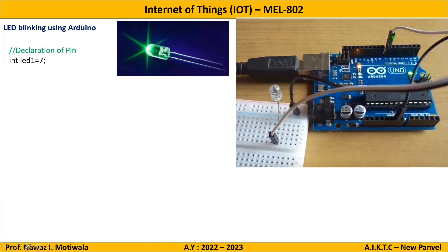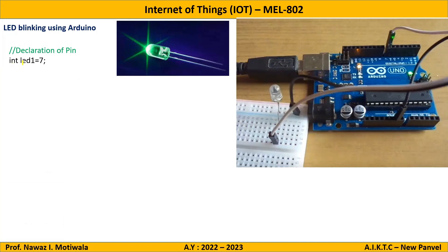LED1 is just a name I am giving to the LED — you can write any name you want. Pin number seven is the pin I will be connecting my LED to. This completes step one, declaring that whatever object I am connecting, I am connecting it to pin number seven of Arduino.